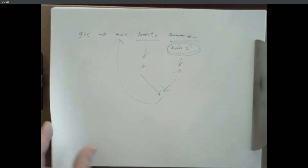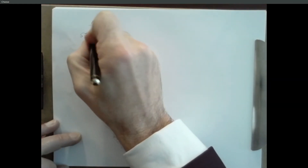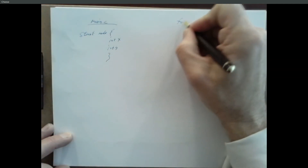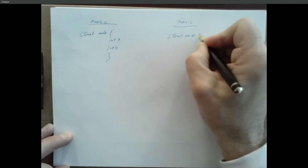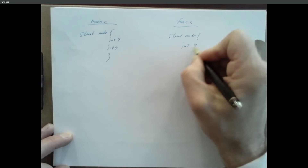Let me give you a different example. Here's main.c — I say struct node with integer x and integer y. And here's my function.c — I say struct node with integer y, integer x. So I have different definitions of what a struct node is.